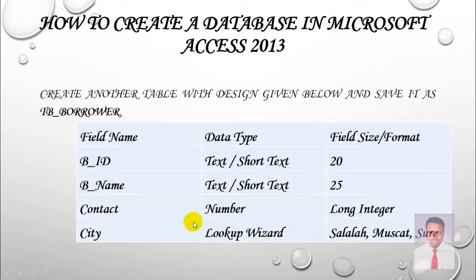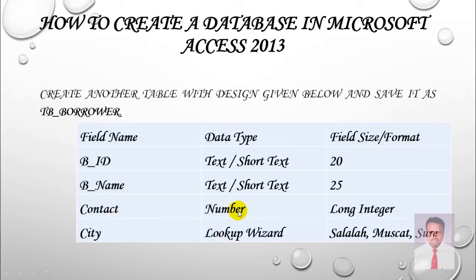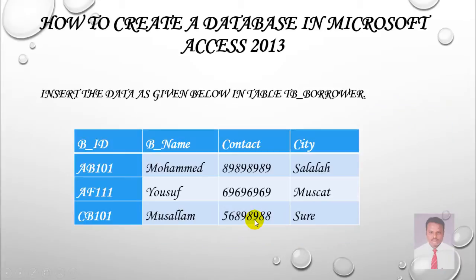Next, we are going to create another table with the following designs: book ID (text or short text), book name (text or short text), contact number, and city using lookup wizard. After that, we are going to feed the table with the following data.